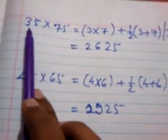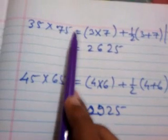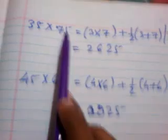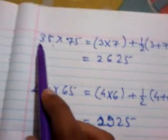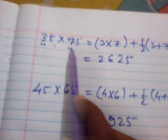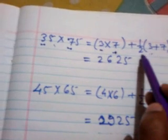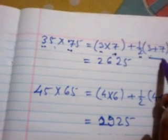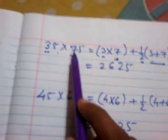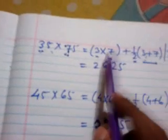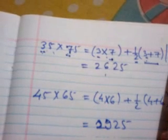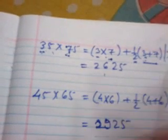Let's see, first of all we have taken two numbers, that is 35 and 75. Here what we have to do: the first two digits, that is 3 and 7, we have to multiply first, and then we have to take the half of the sum of the two tens digits, that is 3 and 7, and then we have to add the numbers. Then we have to write 25 at the back, that is 26 25.